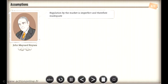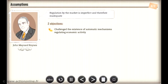Keynes challenged the existence of automatic mechanisms regulating economic activity. He also stressed the need for state intervention in order to correct permanent equilibria, with one of the most obvious examples being the underemployment equilibrium. The Keynesian school of thought is based on three assumptions, which we will examine in the following screens.